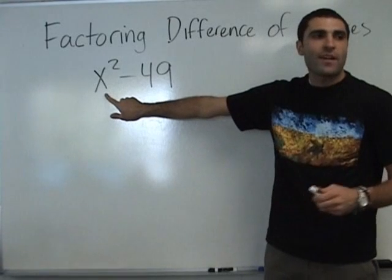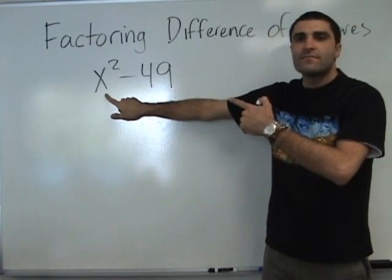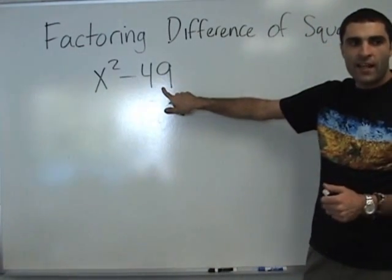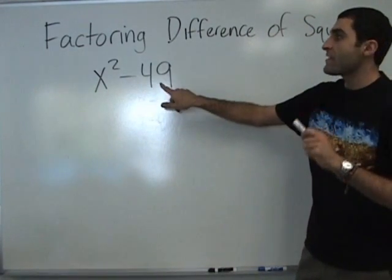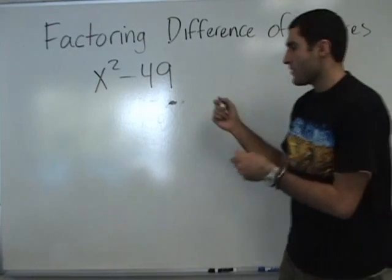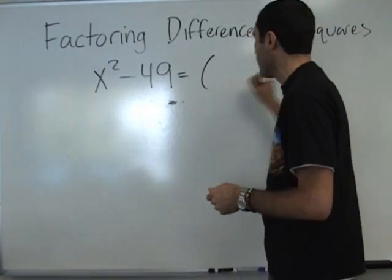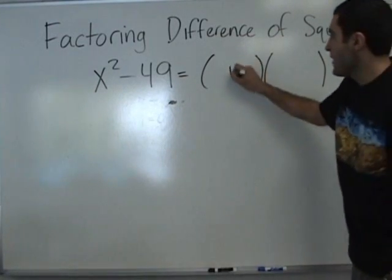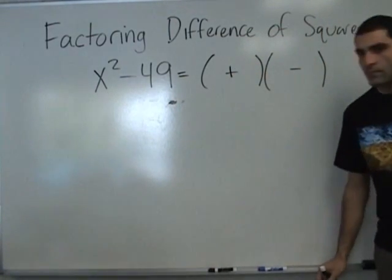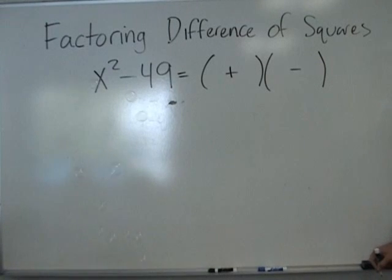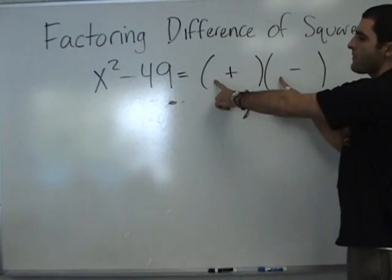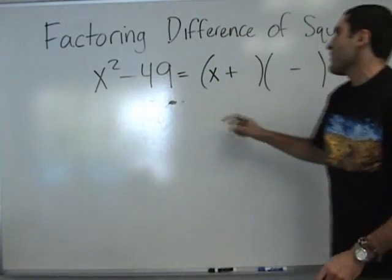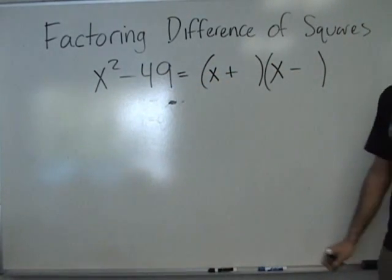Is this a perfect square? As in something times something makes it? What times what makes it? X times X. Okay. And now the first term — what times what makes X squared? X times X. And then 7 and 7.